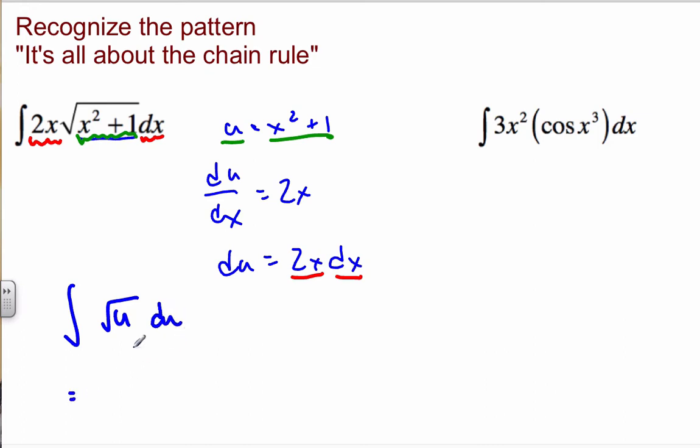And so now, I'm going to integrate this. This is going to be U to the 3-halves, because that's exponent 1-half. Divide it by the reciprocal, plus C.